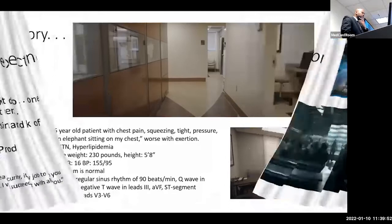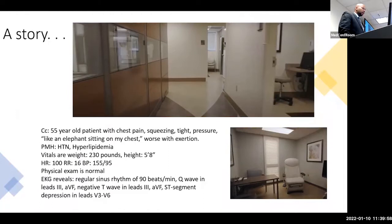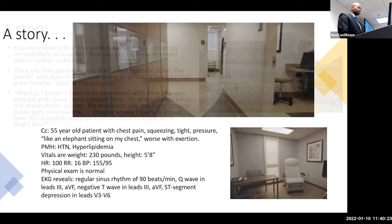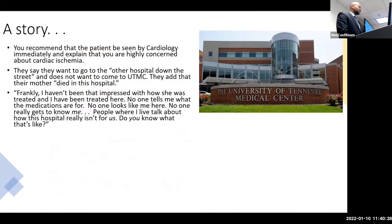I think it's apropos to this particular group: a patient presents to you for chest pain, describing it like an elephant sitting on their chest. They have a history of hypertension and hyperlipidemia. Their blood pressure is elevated at 155 over 95. The physical examination turns out to be normal, and the EKG has some changes that suggest something's going on. The individual's risk factors are concerning, and you recommend this patient be seen by your cardiology colleagues — you are concerned about cardiac ischemia.